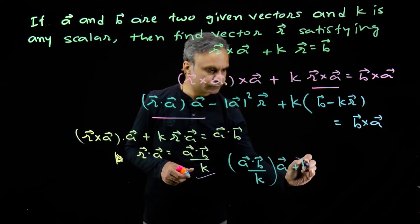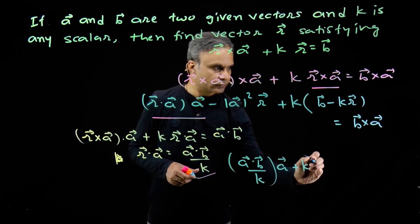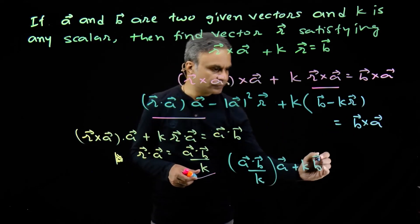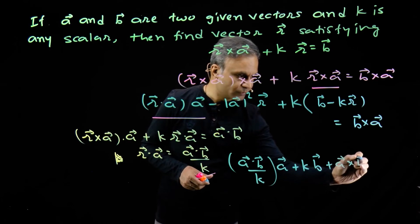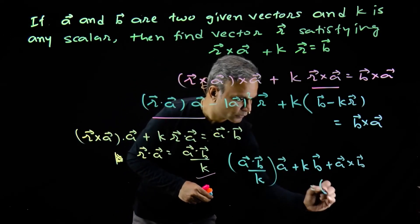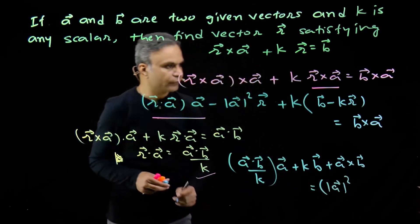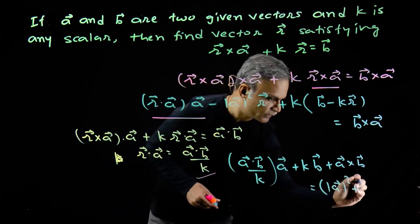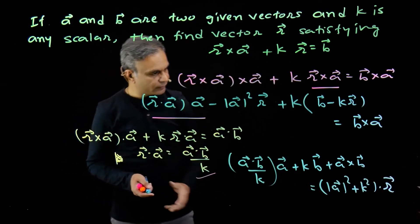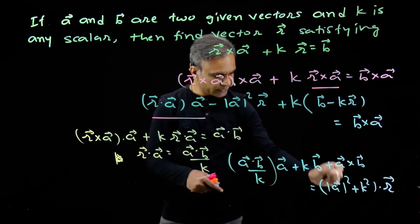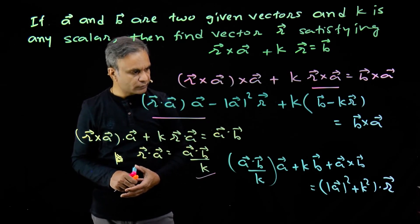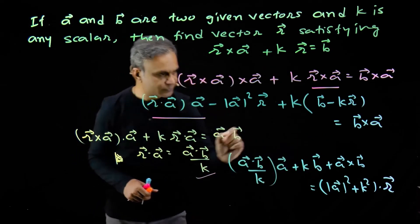Substituting the value of r dot a (which is a dot b over k) into the equation, we get (a dot b over k) times vector a plus k times vector b. Transferring terms: we have plus a cross b on one side. Collecting terms containing r gives us (square of modulus of a plus k squared) times vector r. So finally, vector r is equal to (a dot b over k times a plus k times b plus a cross b) over (k squared plus square of modulus of a), expressed in terms of vectors a, b and scalar k.